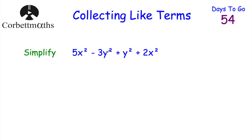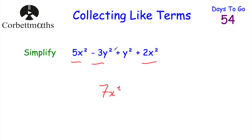Now: simplify 5x² − 3y² + y² + 2x². Collect the like terms. For the x² terms: 5x² + 2x² = 7x². For the y² terms: −3y² + y² = −2y². So the answer is 7x² − 2y².